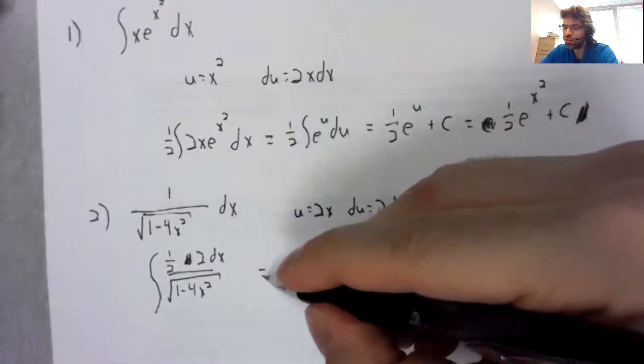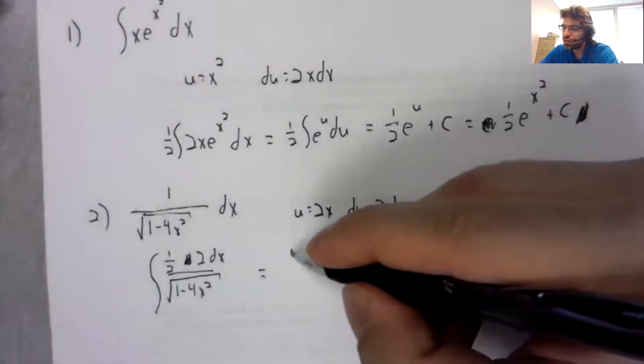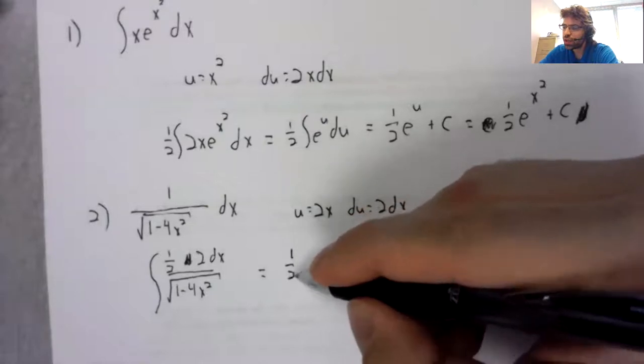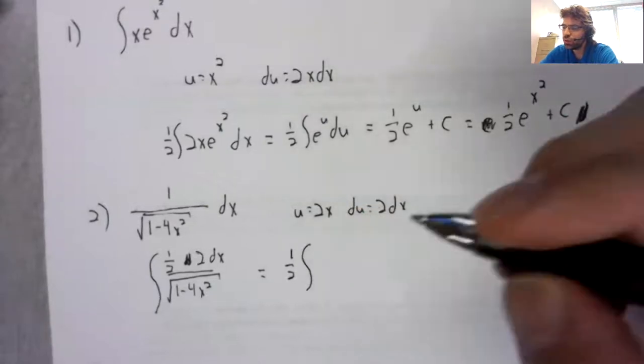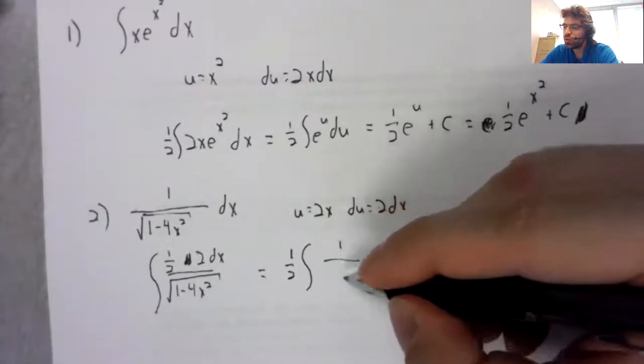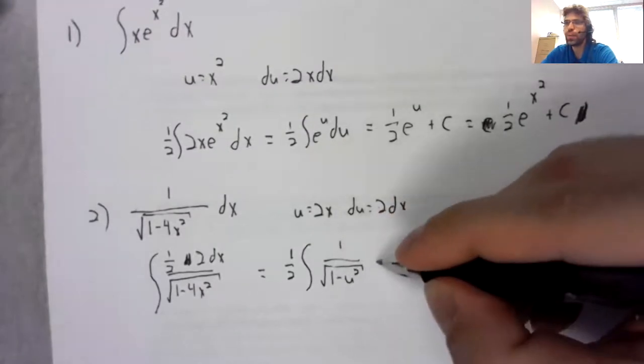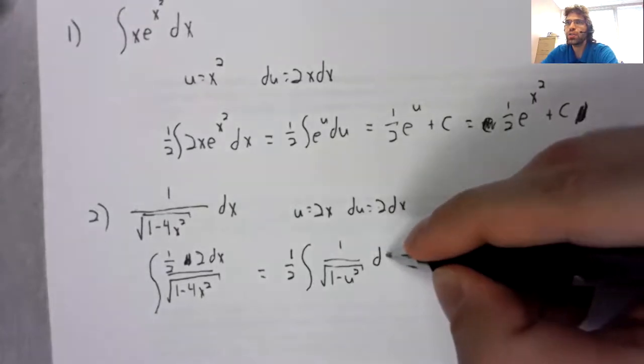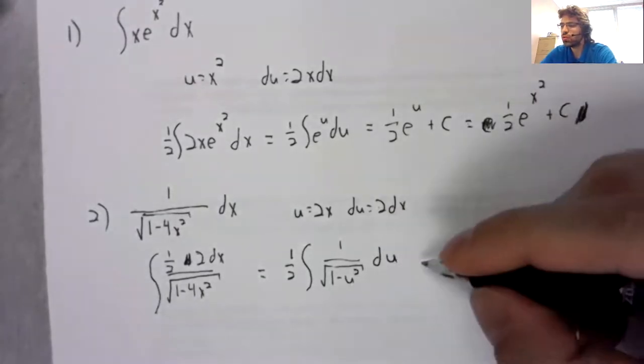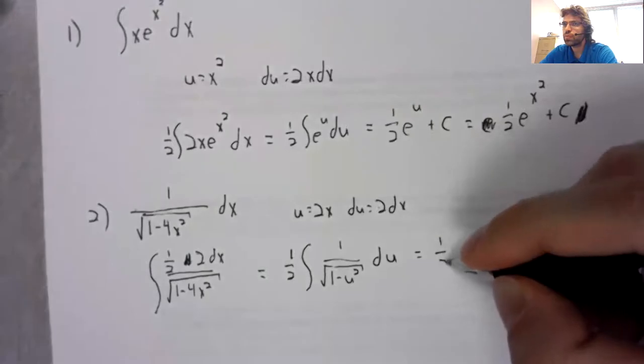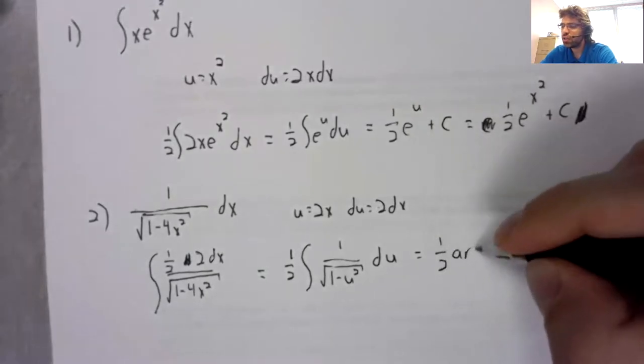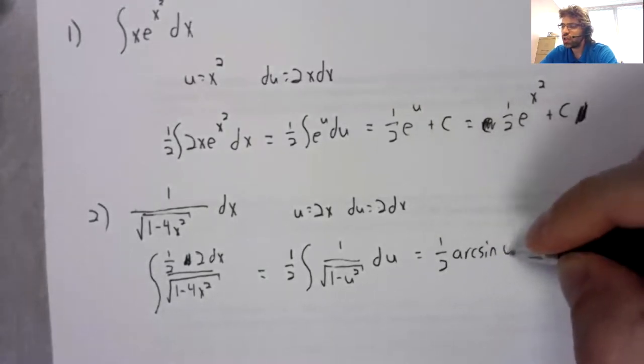But then we have one-half the integral of one over the square root of one minus u squared, du, which is one-half the arcsine of u plus a constant of integration.